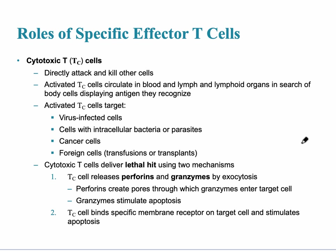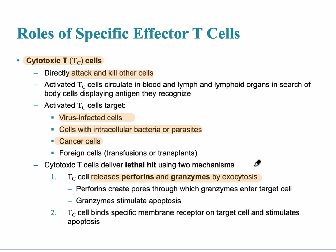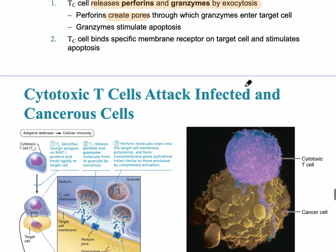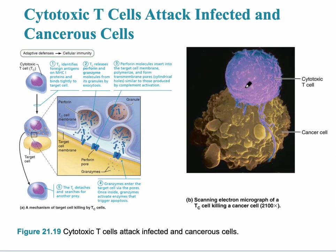The cytotoxic T-cell is known for directly attacking and killing other cells. It can circulate throughout the blood and the lymph. The main cells it kills are virus-infected cells, cells with intracellular bacteria, parasites, and cancer cells. The cytotoxic T-cell works kind of like the natural killer cells did, with the perforins — creating pores in the target cell to destroy it.